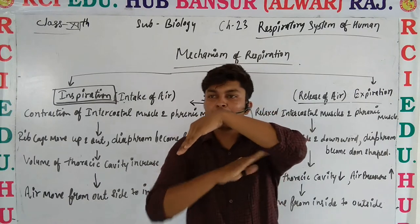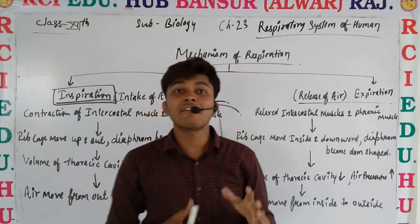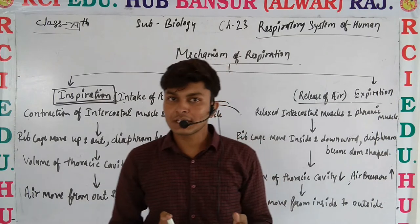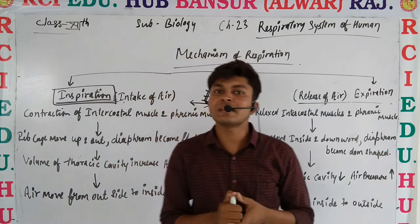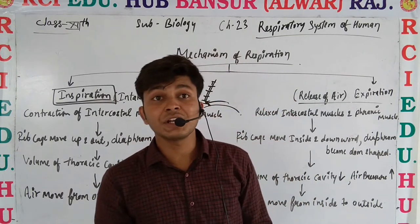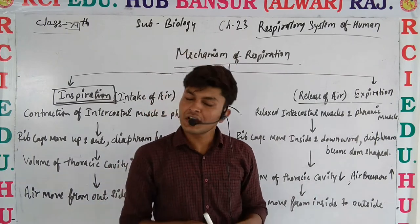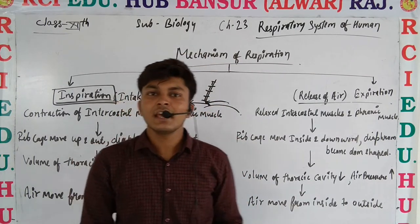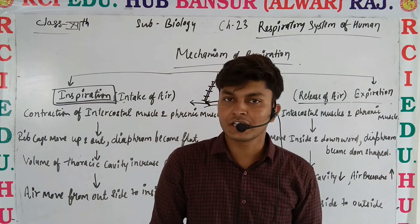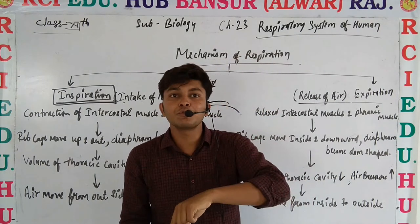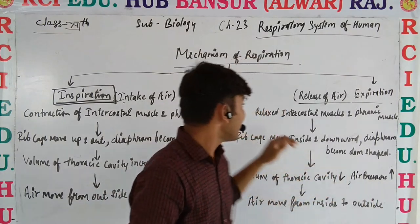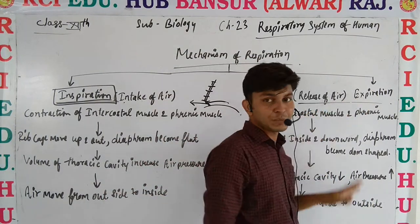Due to the dome shape, the thoracic cavity volume decreases. As the thoracic cavity volume decreases, the inside air pressure becomes greater than the surrounding air pressure, so air moves from inside to outside. That process is known as expiration.